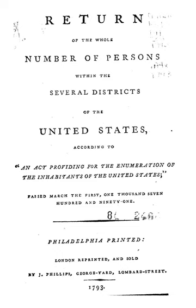In the United States, census data indicate that the number of children in interracial families grew from less than one half million in 1970 to about two million in 1990. In 1990, for interracial families with one white American partner, the other parent was Asian American for 45%.